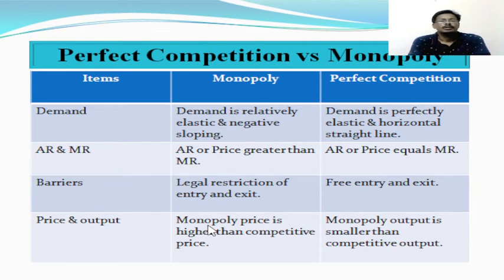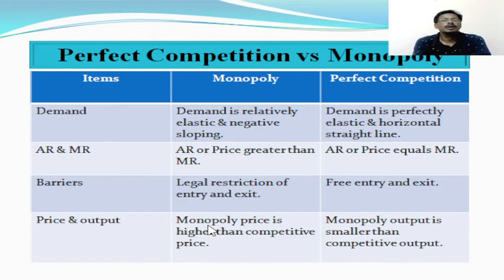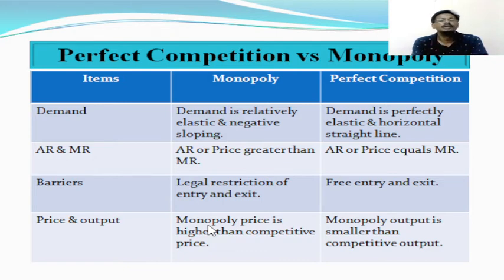Another difference relates to demand. In case of monopoly, demand increases with the fall in price and falls with the rise in price. It means demand under monopoly market is called to be elastic because with a change in price its demand changes, and the shape of the demand curve is downward sloping. But in case of perfect competition, demand is called to be perfectly elastic because without any change in price, demand may rise or fall, and the demand curve takes the shape of a horizontal straight line.